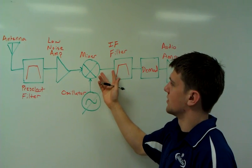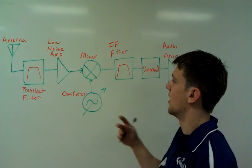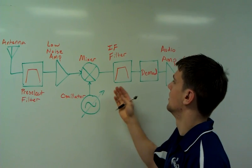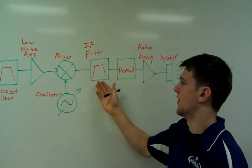The output of the mixer is what we call an intermediate frequency. It's a down-converted spectrum of the FM band. We then filter out just a specific frequency that we want, and that's how we choose our channel.